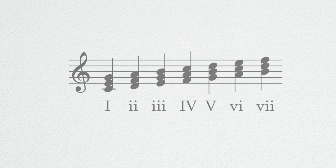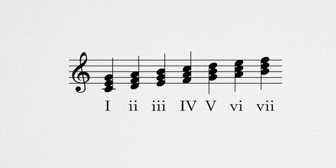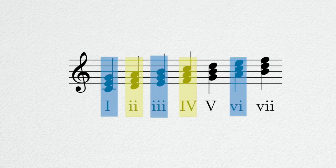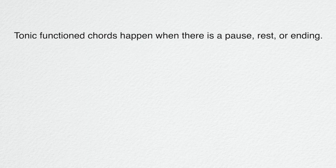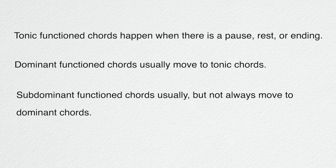So all of the chords that we can make in a major scale are assigned to one of these three possible functions: stability, instability, high instability. In the most basic possible terms, and there are always many, many exceptions, even in simple music, tonic chords will happen throughout a piece whenever there is a pause, or a rest, or an ending. Dominant chords nearly always move to tonic chords. And subdominant chords usually, but not always, move to dominant chords.